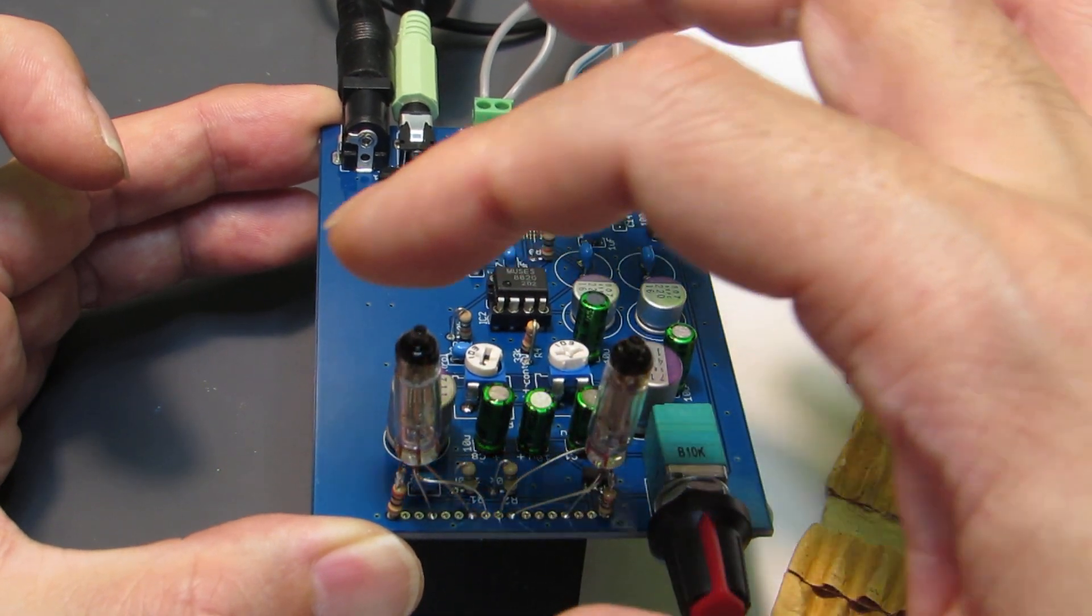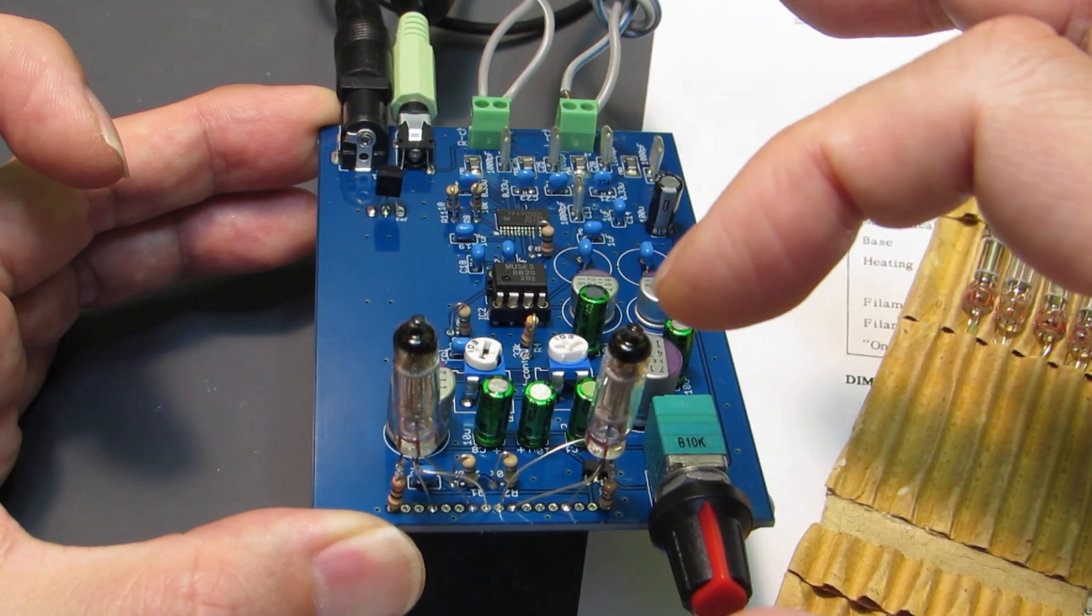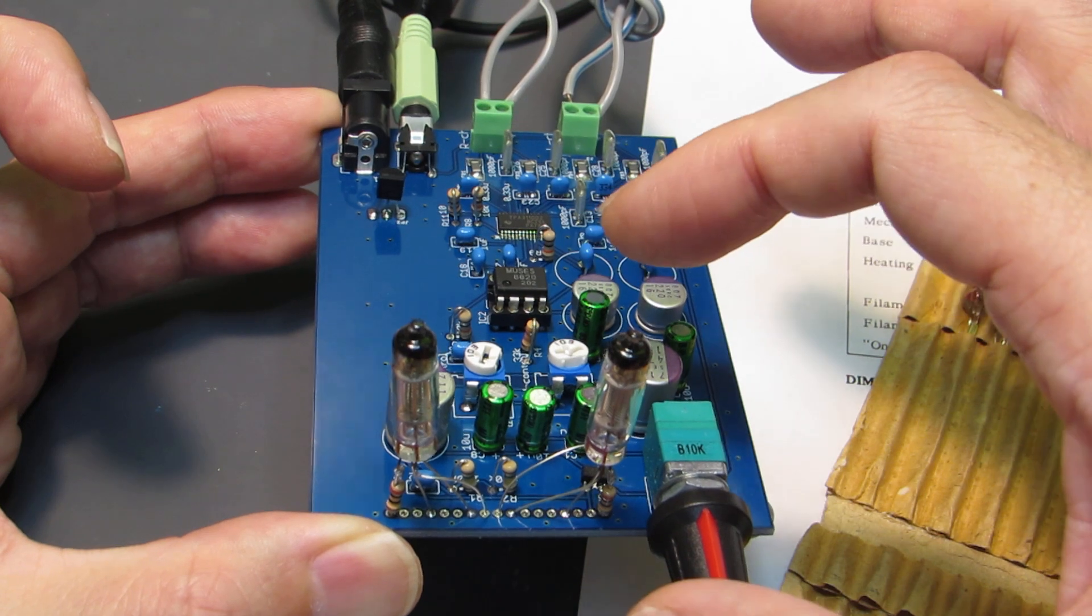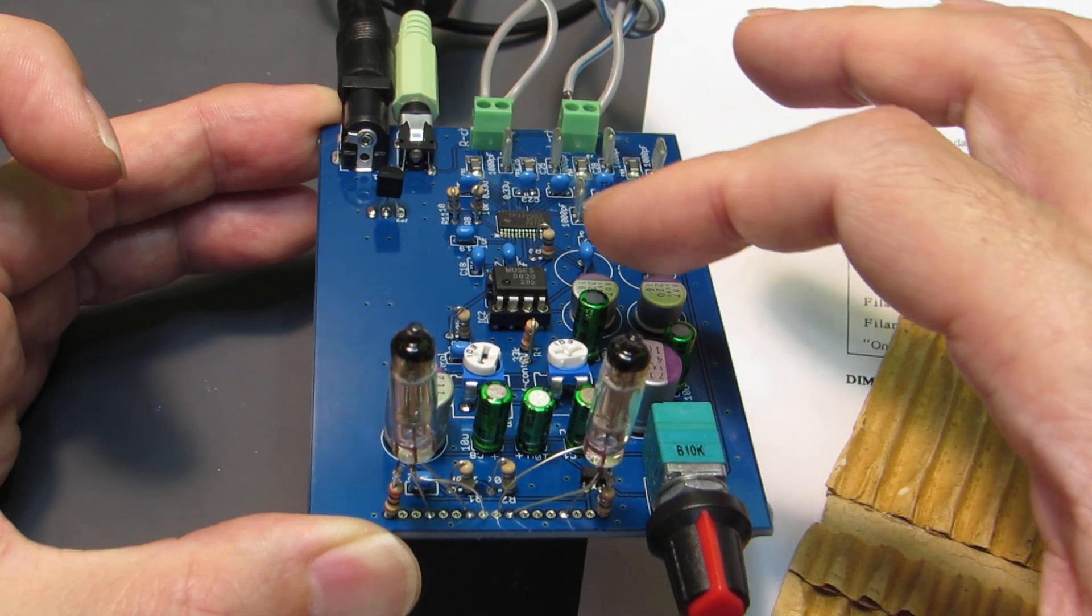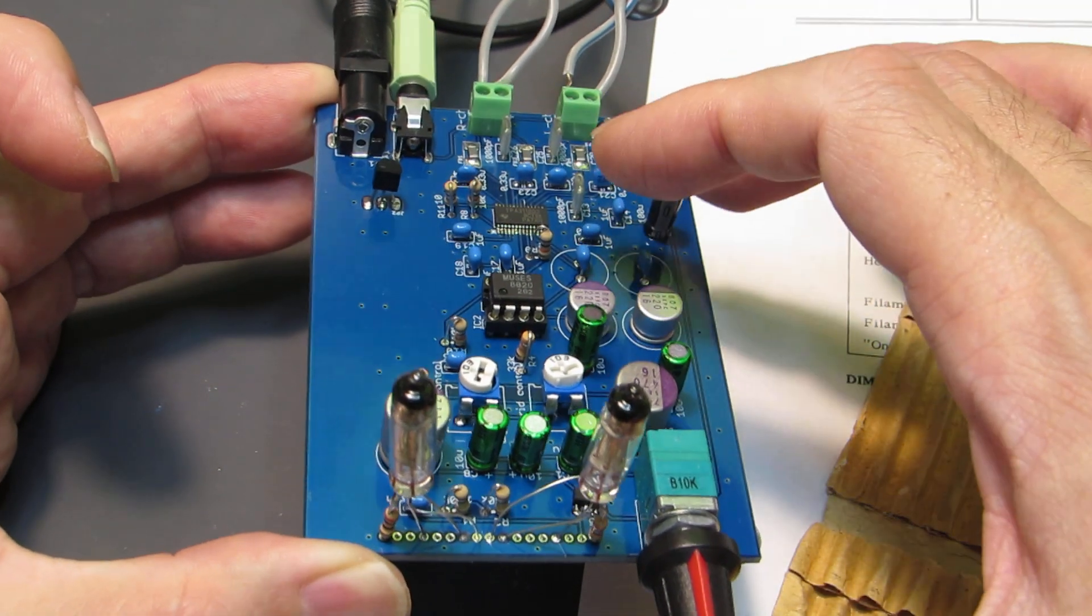Because the output impedance of the VFD is very high, the impedance is converted to low, driving the class D amplifier, and finally goes out.